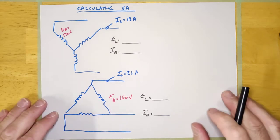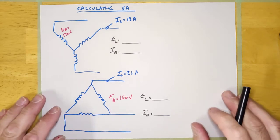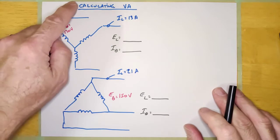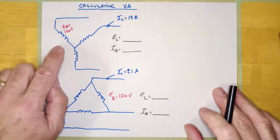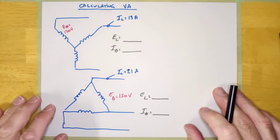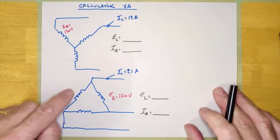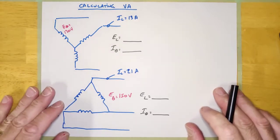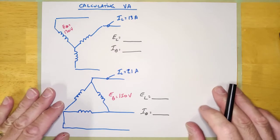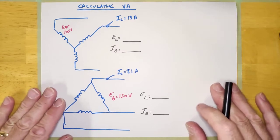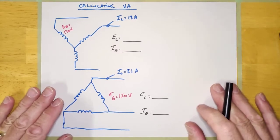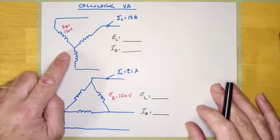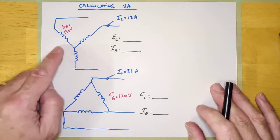Hey guys, welcome back. I've got a little lesson here on how to calculate VA when it comes to three-phase circuits. It's the same formula whether it's Y or Delta, so don't sweat it too much. But I've got a little example here.